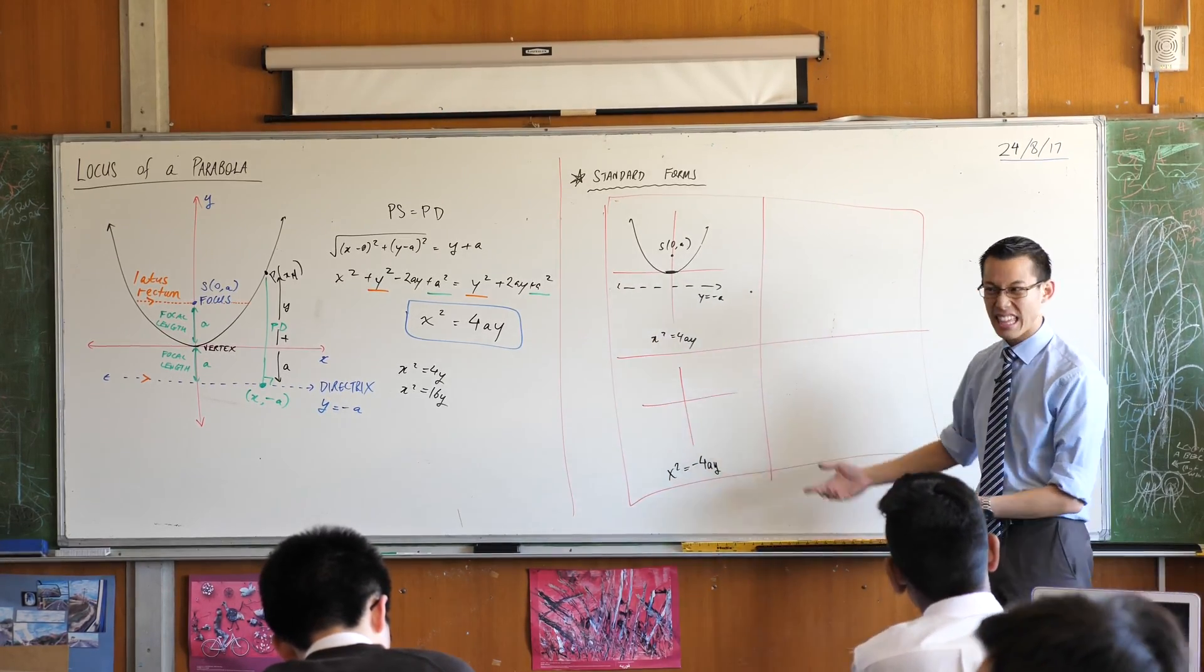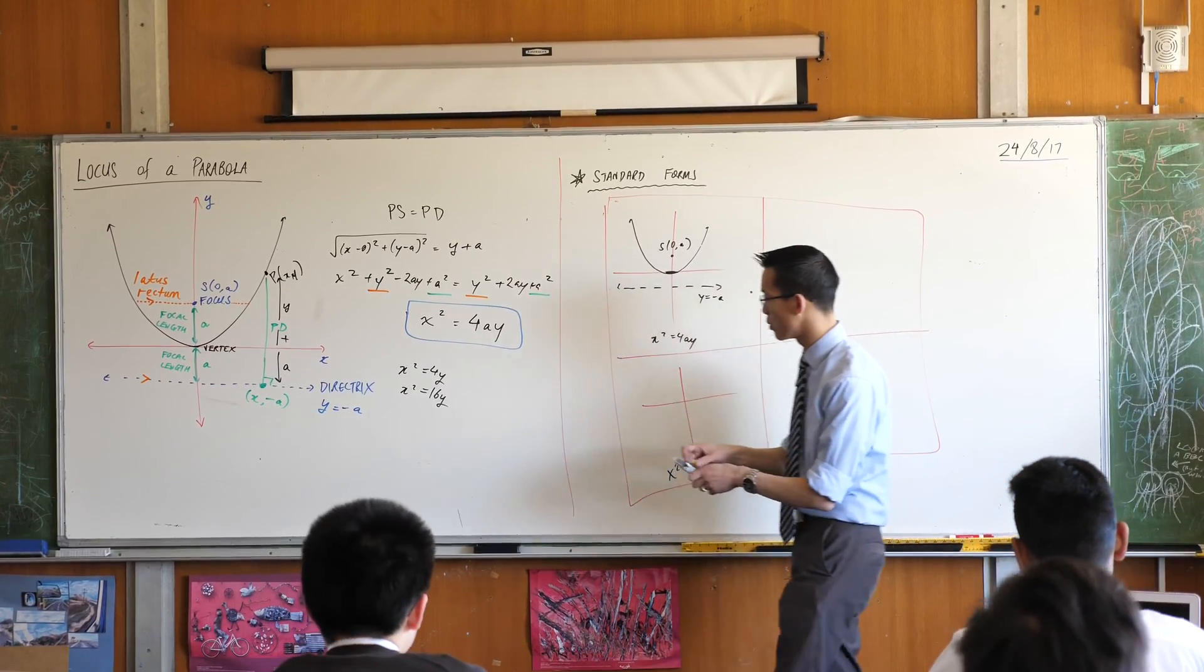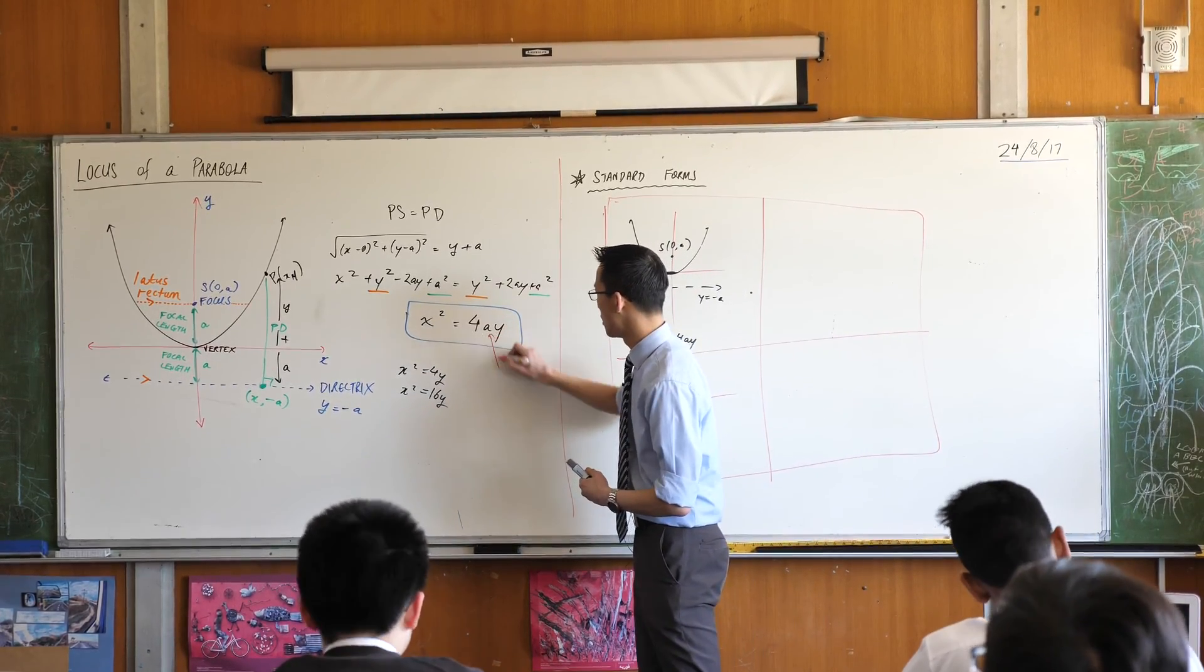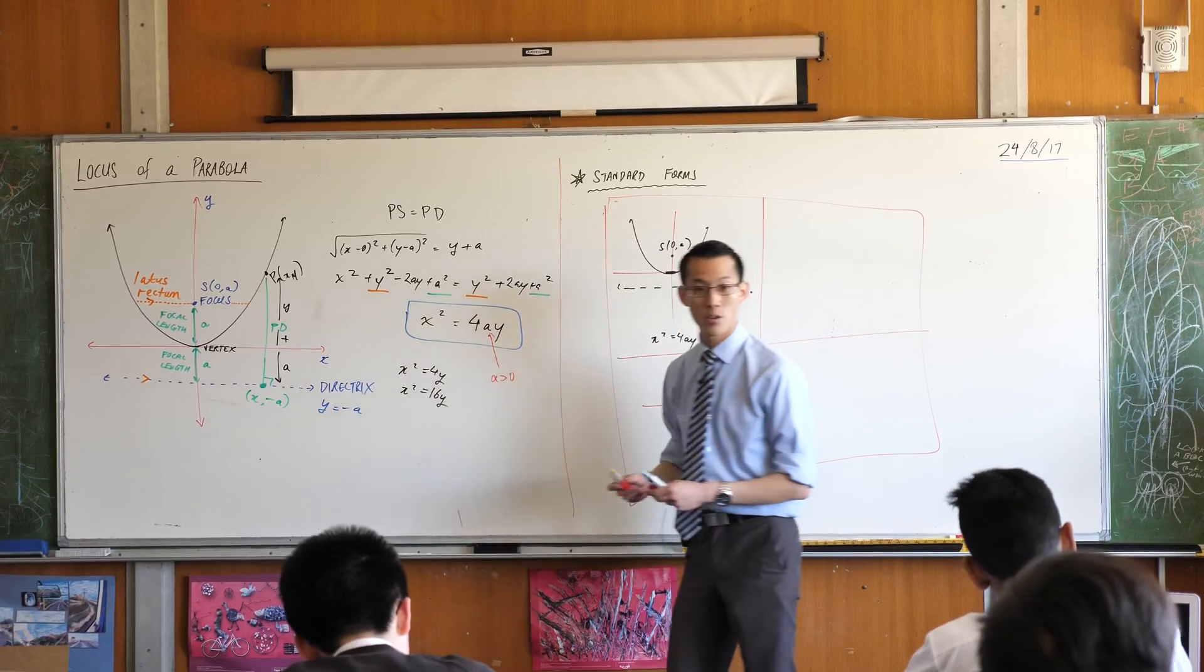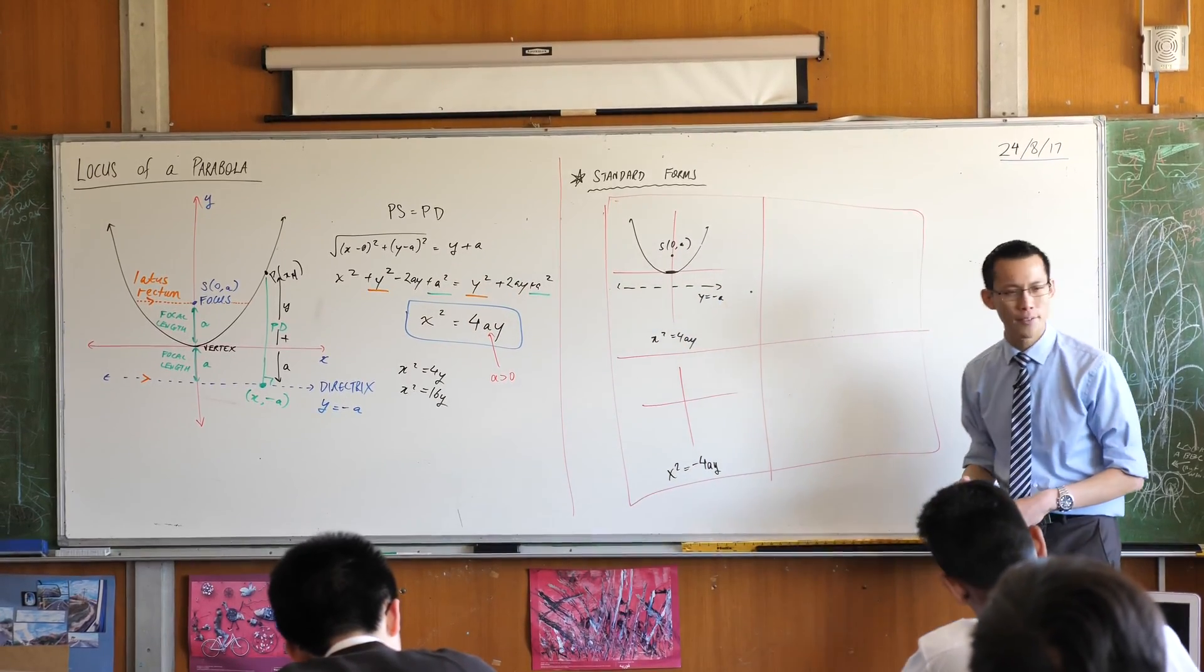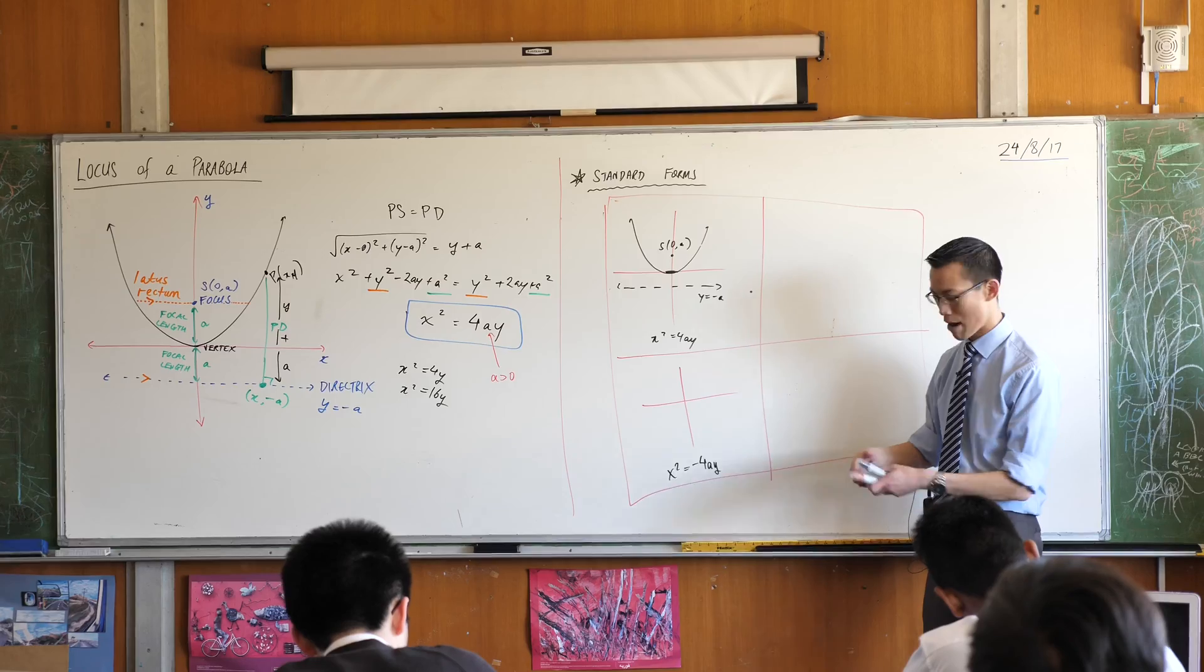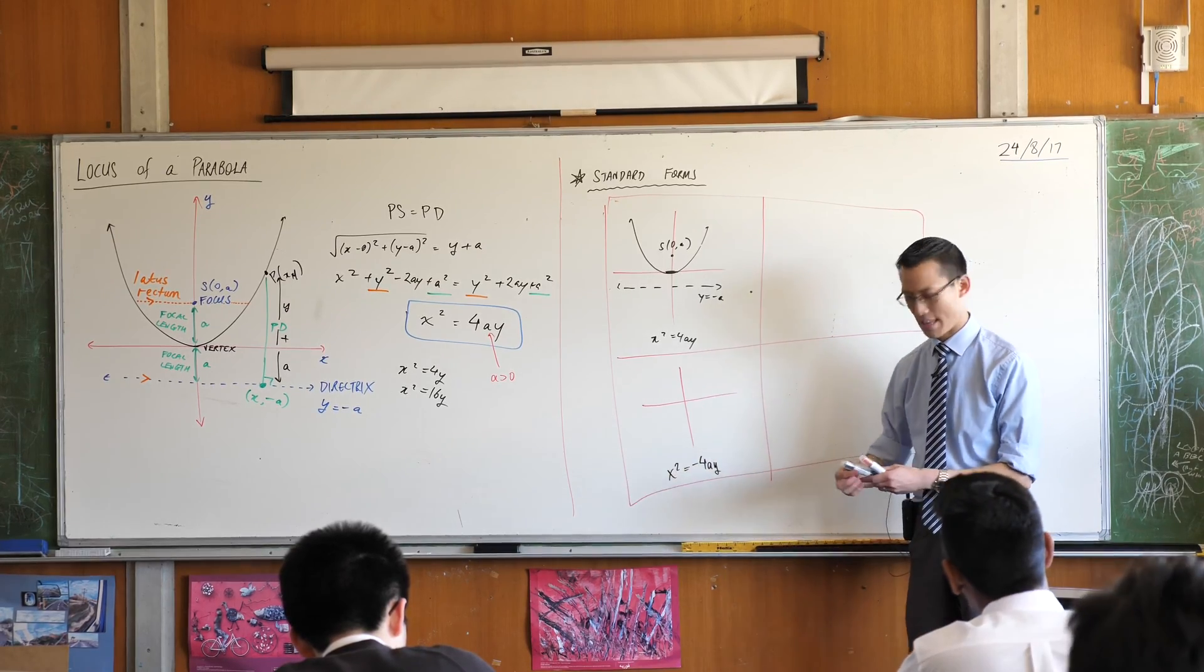It's worth noting since a is a length, a is always positive, so I should probably state that here. A is greater than zero because it's a focal length after all. So in order to get a concave down parabola, you have to put a minus sign on the outside.